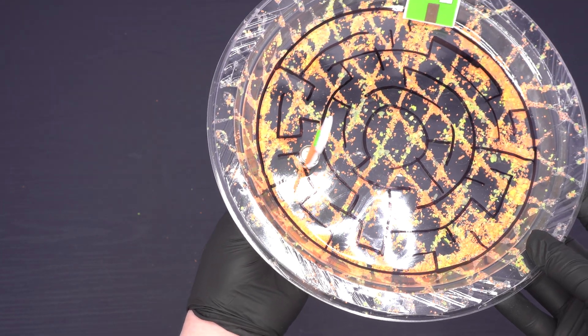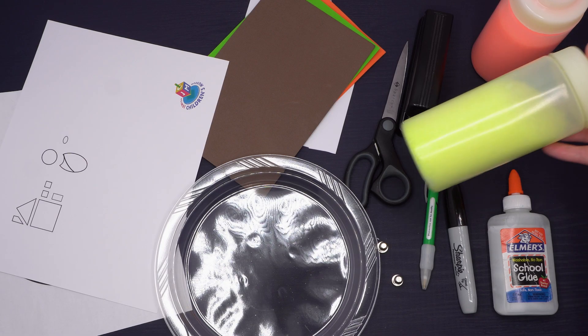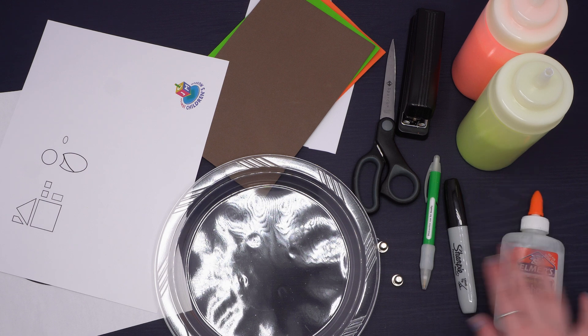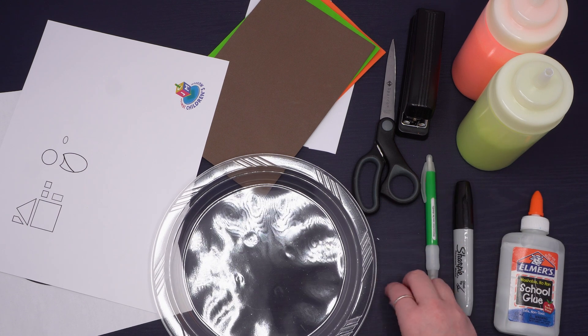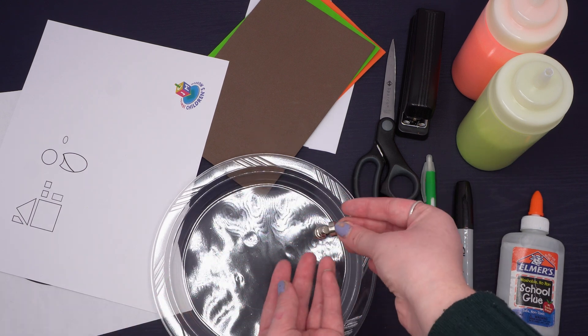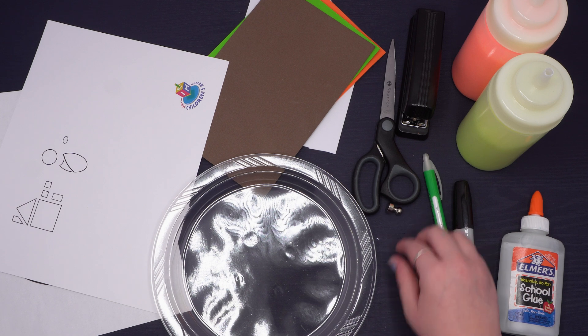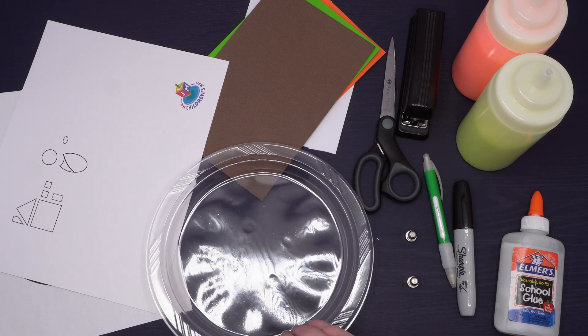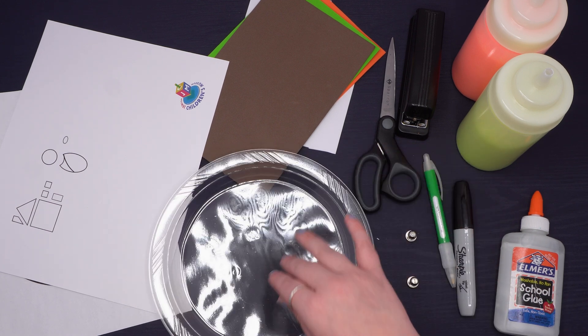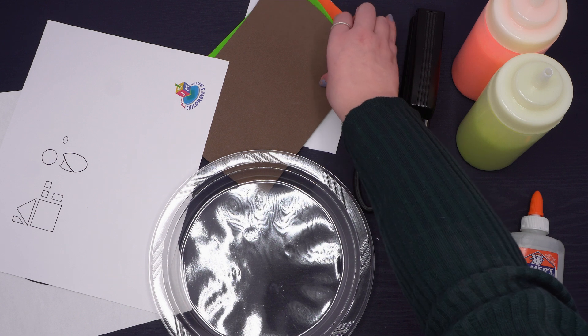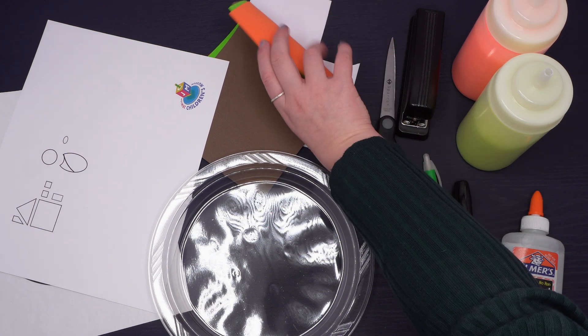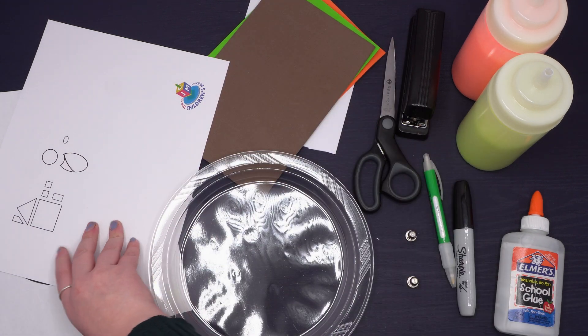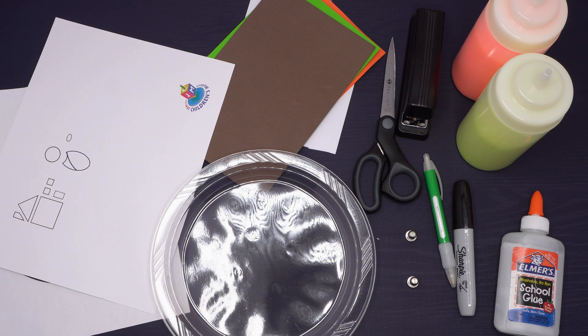Here are the supplies we will need: colored sand in yellow and orange, liquid glue, a black sharpie, a pen, magnets, scissors, two see-through 9 inch plastic plates, four colors of craft foam sheets in brown, green, orange and white, the printed baby and house template, the printed maze template, and a stapler.